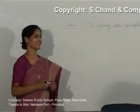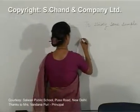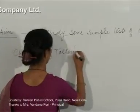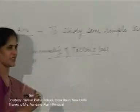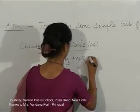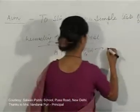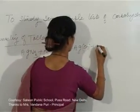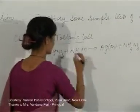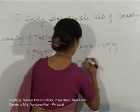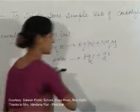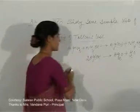A student asks about the chemistry of Tollens' reagent test. The preparation: silver nitrate plus ammonium hydroxide gives silver hydroxide plus ammonium nitrate. In the second step, two molecules of silver hydroxide give silver oxide (Ag₂O) plus water.